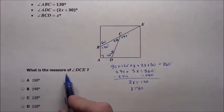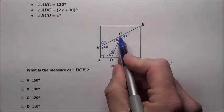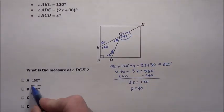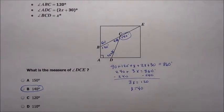Let's see what it's asking for. It's asking for D to C to E, which is what we just found. So it's going to be 140 degrees right there. Choice B.